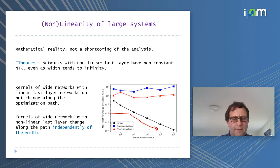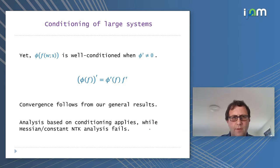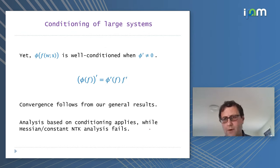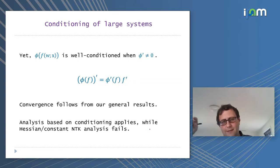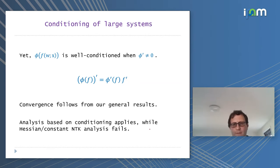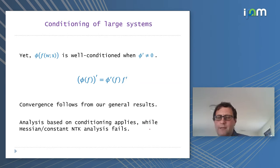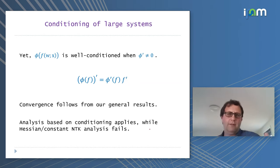This is consistent with the Hessian not becoming small. But from a conditioning point of view, there's no problem — if phi has a Jacobian separated from zero, you can still prove conditioning of phi∘F by composition. So the conditioning analysis works even when the Hessian control and NTK linearity fail.